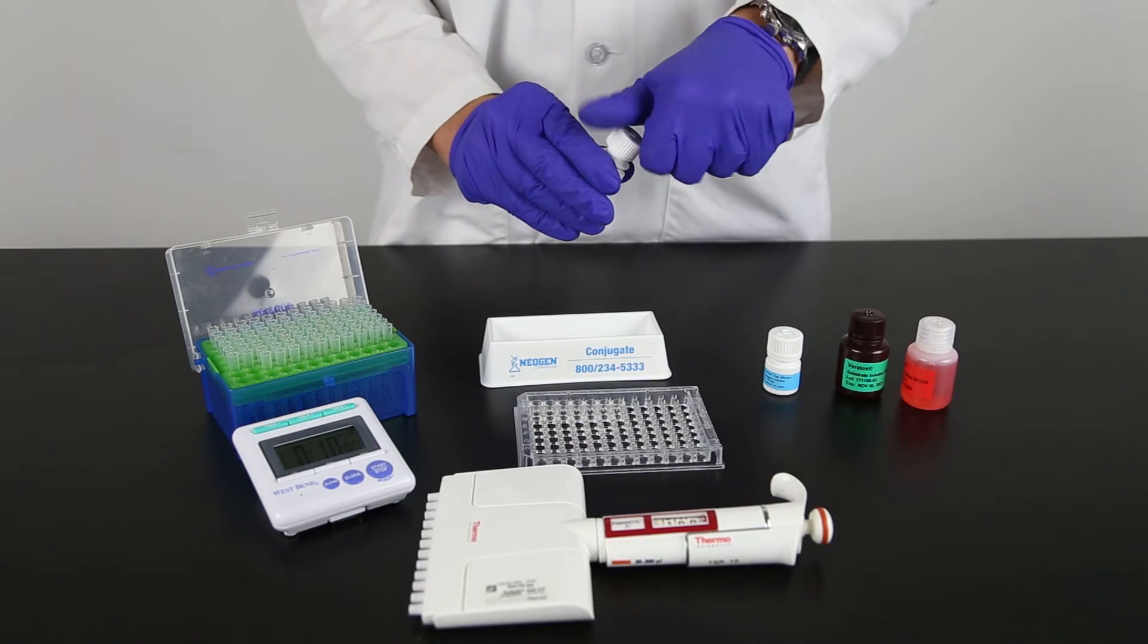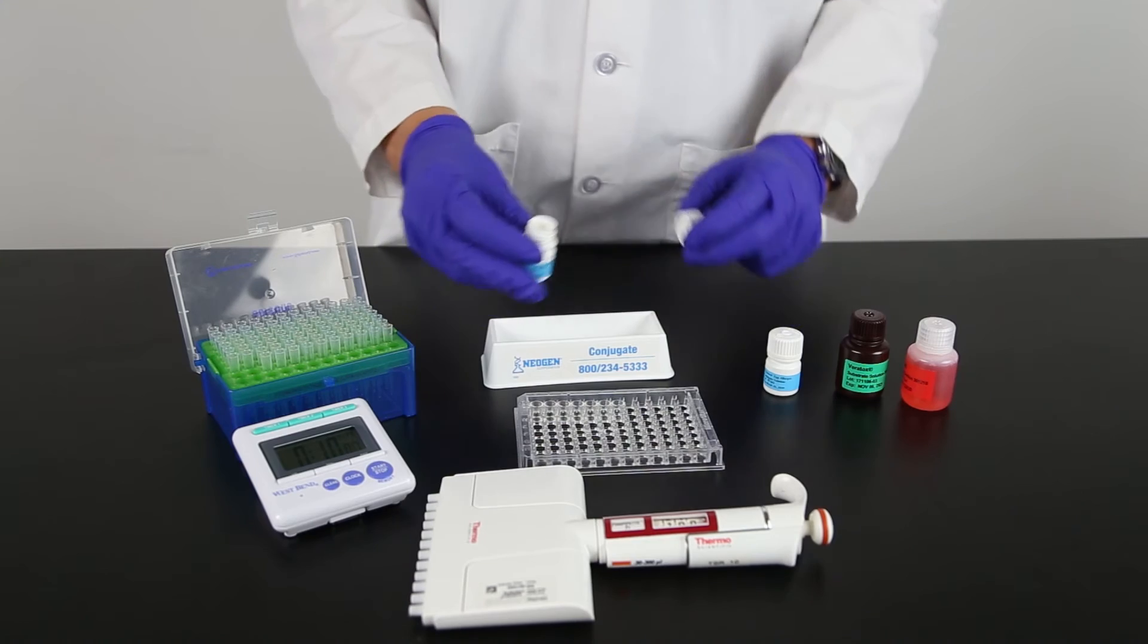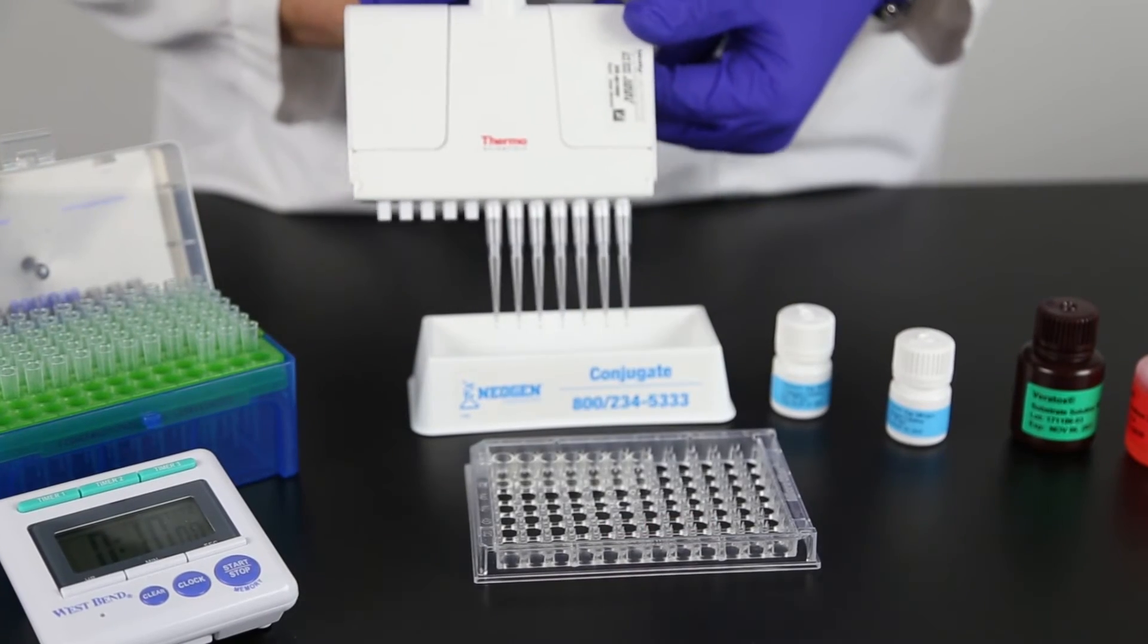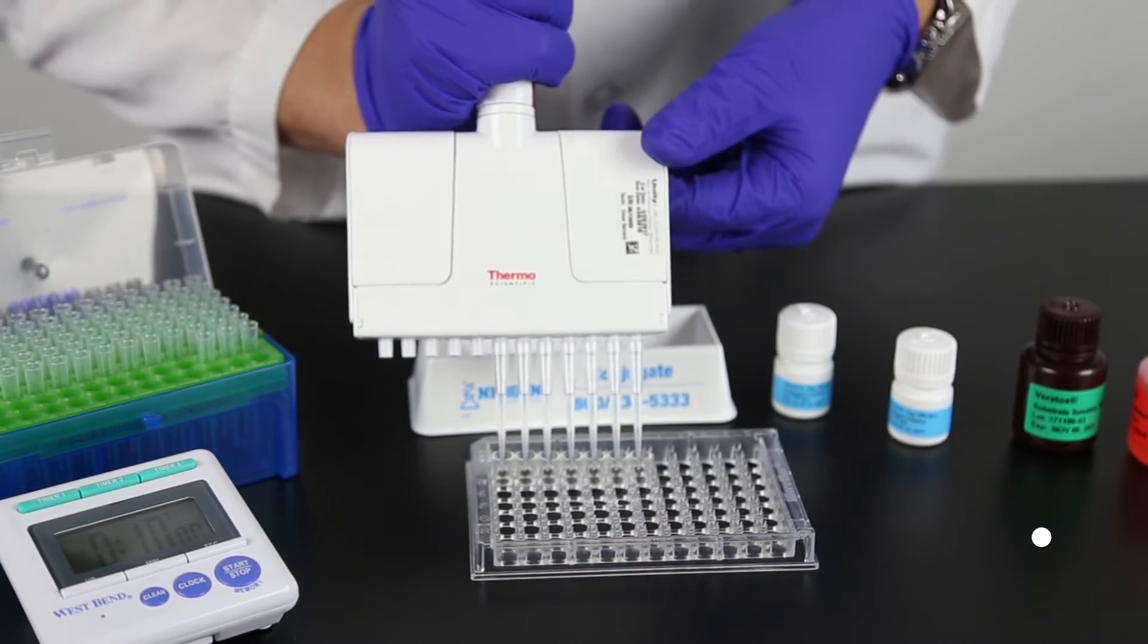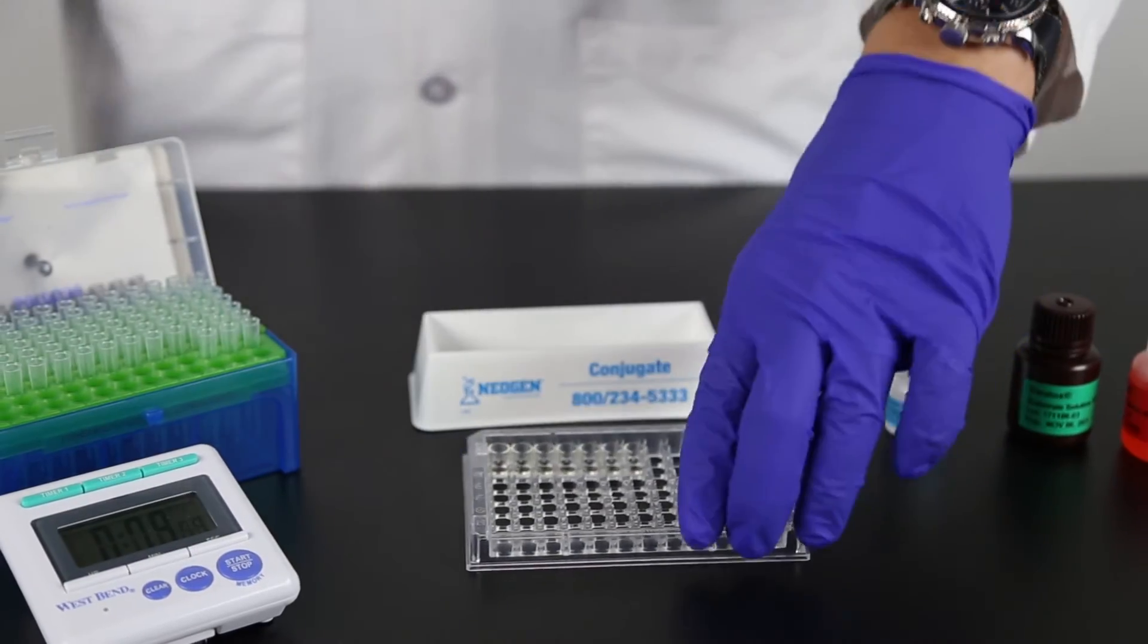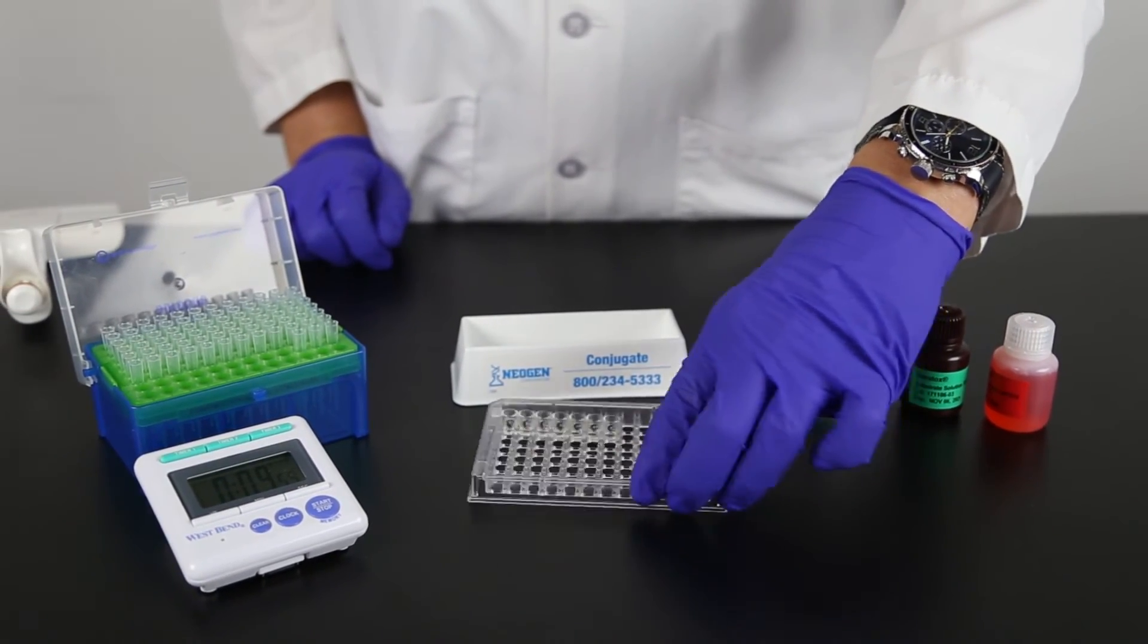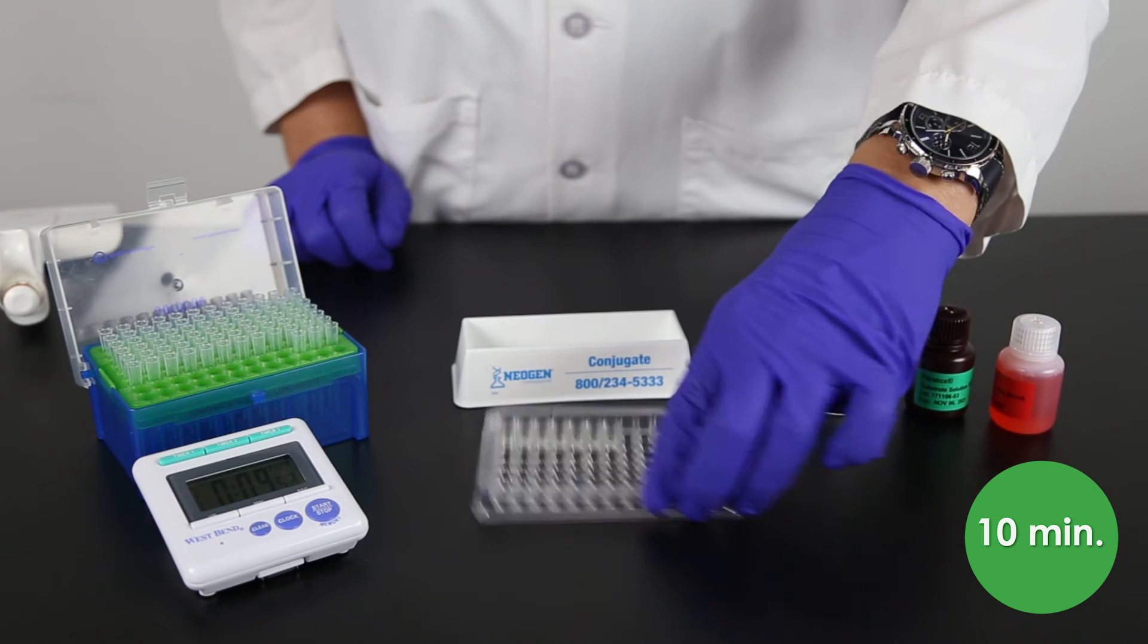Pour the needed volume of conjugate from the blue labeled bottle into a clean reagent boat. Using the 12-channel pipetter, transfer 100 microliters of the conjugate into all the wells and mix by sliding the microwell holder back and forth on a flat surface. Incubate for 10 minutes at room temperature.